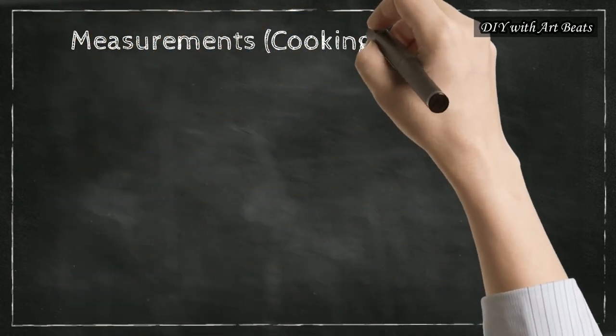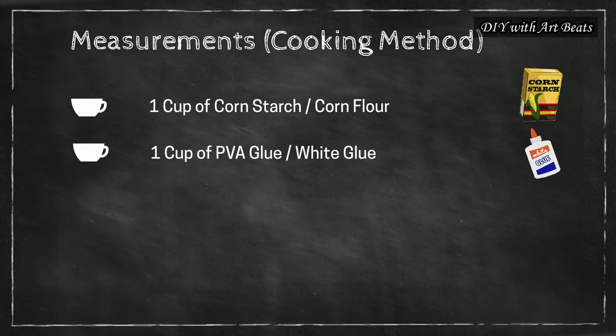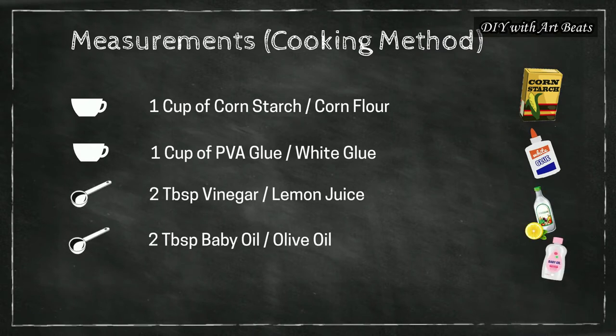And the measurements that we will use are 1 cup of corn starch, 1 cup of PVA glue or white glue, 2 tablespoons of vinegar or you can also use lemon juice here and 2 tablespoons of baby oil or olive oil.